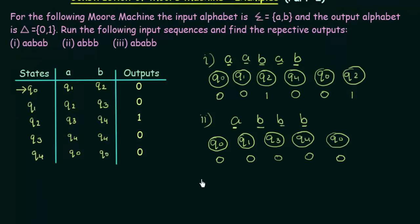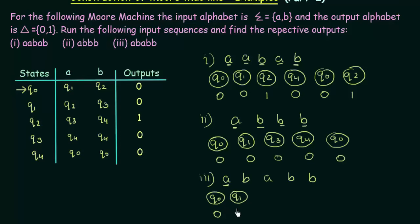Now let's go to the third input sequence, which is ABABB. As usual, we start with Q0, which is the starting state, and Q0 produces output 0. Then we get the first input A. Q0 on A goes to Q1, and Q1 produces output 0. Then we get the next input B in Q1. In Q1 if we get B, it goes to Q3, and Q3 produces the output 0. The next input is A and we are in Q3. Q3 on getting A goes to Q4, and Q4 produces the output 0.